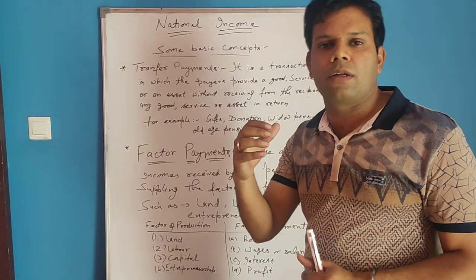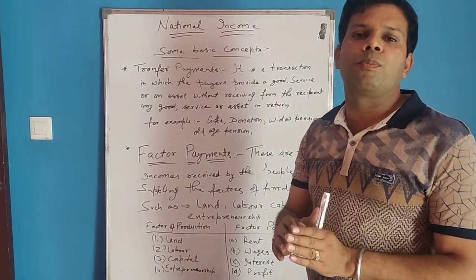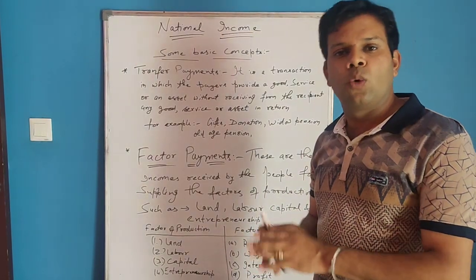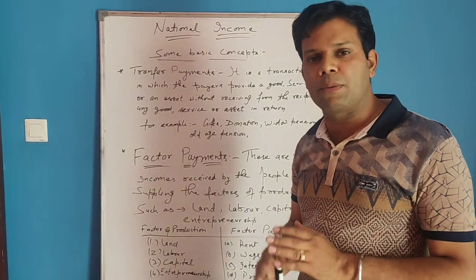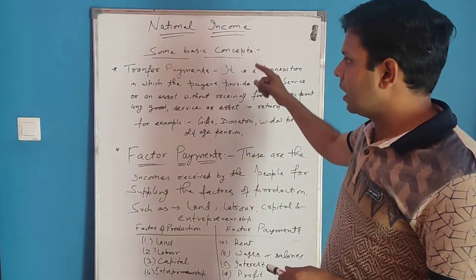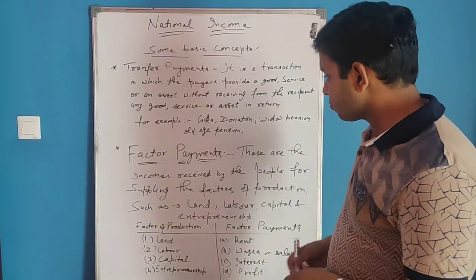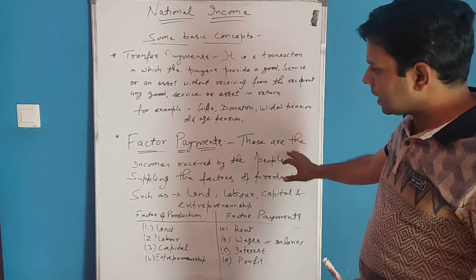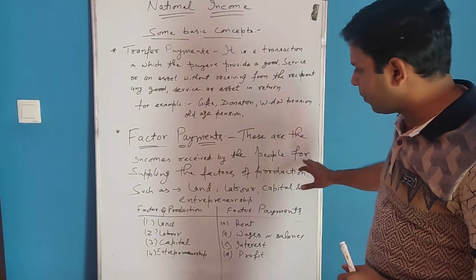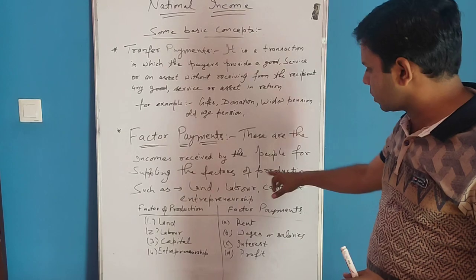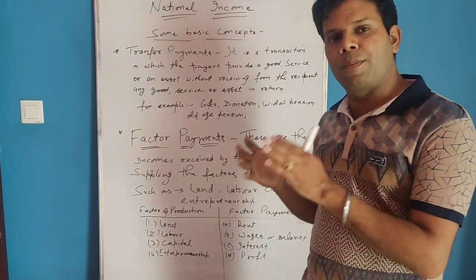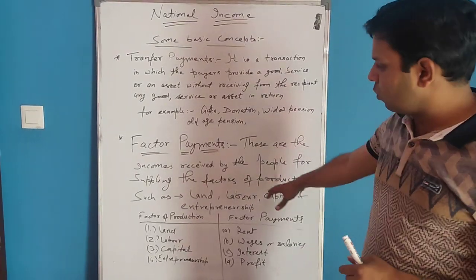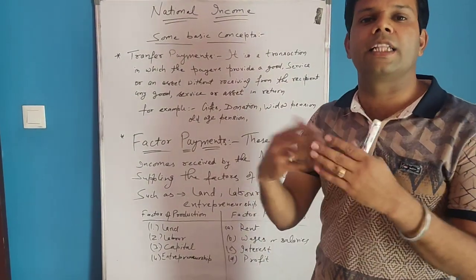Factor payments — these are the incomes received by the people for supplying the factors of production. Income received because the factors of production are used. These are the incomes received by the people for supplying the factors of production. Retirement pension is a factor payment, as it is a payment for previous years' time period services rendered.